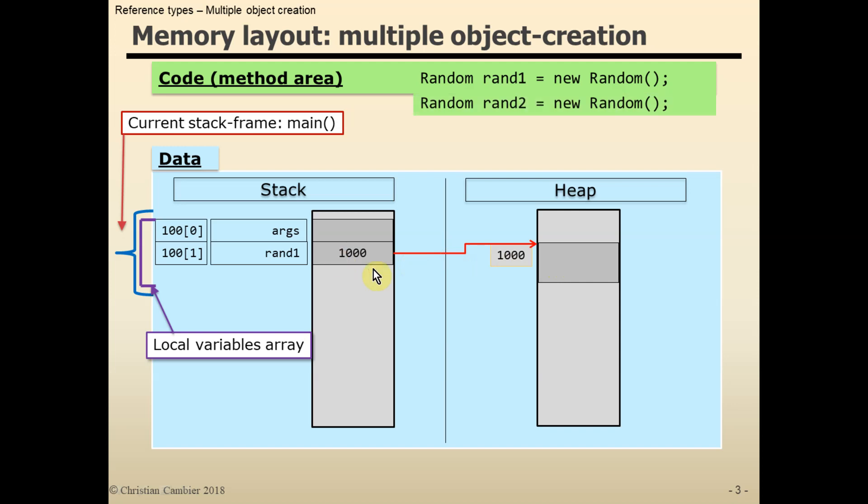A similar story when we declare a new reference variable rand2 for which we create a new random object. First, rand2 is stored at the third position in the local variables array. Since a new random object is created, it is located at a different address on the heap. Here I use fictional number 1500, and then the assignment.